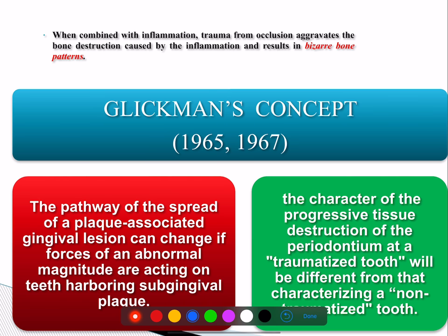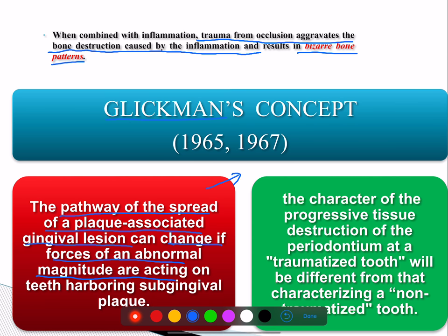When combined with inflammation, trauma from occlusion aggravates the bony destruction caused by inflammation and results in bizarre bone patterns. Glickman has explained this association: the pathway of spread of the plaque-associated gingival lesion can change if forces of an abnormal magnitude are acting. The character of progressive tissue destruction of the periodontium at a traumatized tooth will be different from that of a non-traumatized tooth.